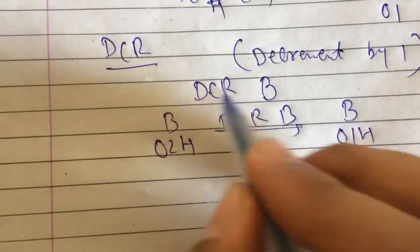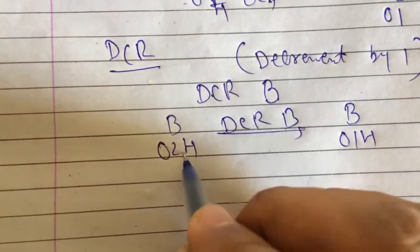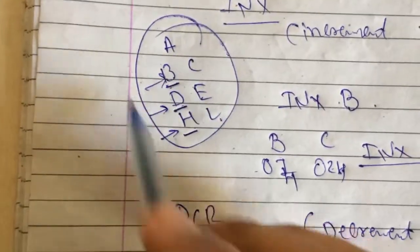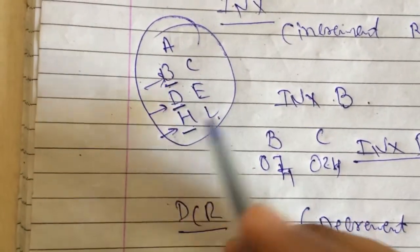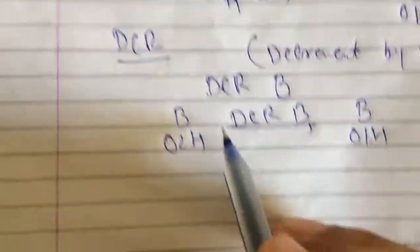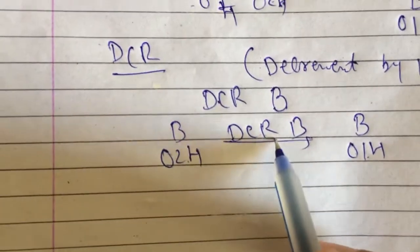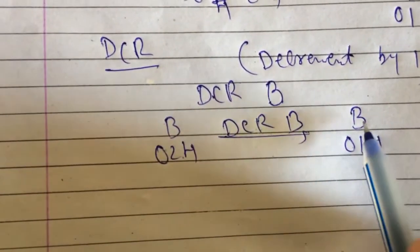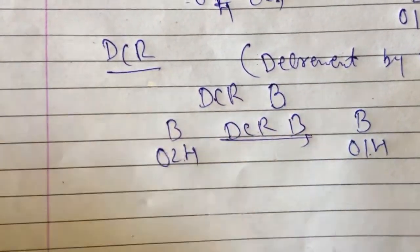If you write DCR C, then the C register is decremented. If you write any register specified — B, C, D, E, H, L — then that register is decremented by 1. Thank you.